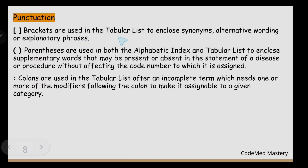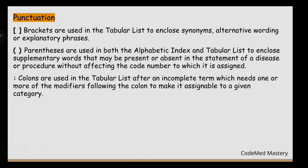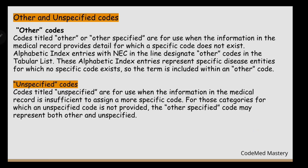Next is punctuation. Brackets are used in the Tabular List to enclose synonyms, alternative words, or explanatory phrases. Parentheses are used in both the Alphabetic Index and Tabular List to enclose supplementary words that may be present or absent in the statement of a disease or procedure. Colons are used in the Tabular List after an incomplete term which needs one or more modifiers following the colon to make it assignable to a given category.